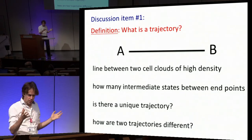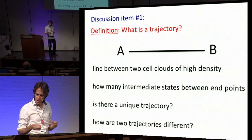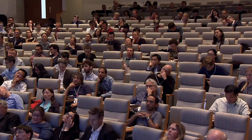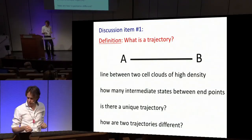The question immediately comes up: how many intermediate states are in between A and B? That's more of a clustering problem. Is there a unique trajectory or are there infinitely many? How are you sure that two trajectories are the same or different? We need some error bars on these kinds of paths to say something about uniqueness.